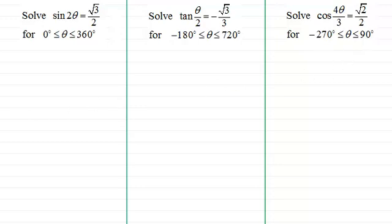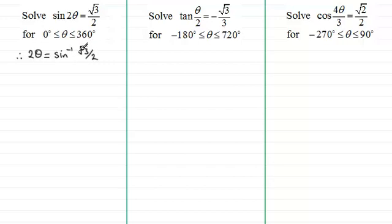Let's start with the first one: solve sine 2 theta equals root 3 over 2. What I'd want to do first of all is to inverse sine both sides. So that would give us 2 theta equals the inverse sine of root 3 over 2. We're taking the positive version for root 3, so this is a positive value. What we've got to do in questions like this is to work out what the new range is going to be — we've got this for theta, but not for 2 theta.